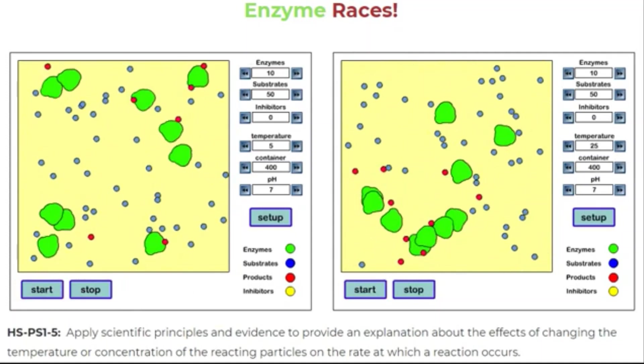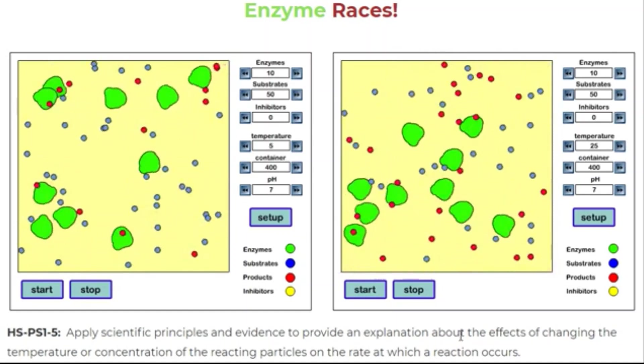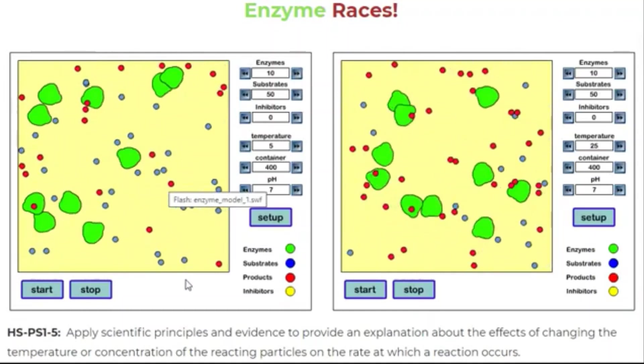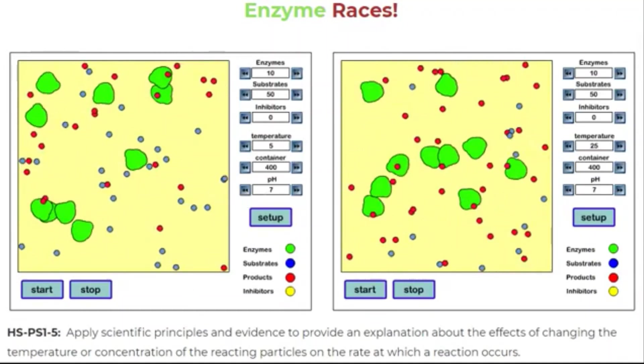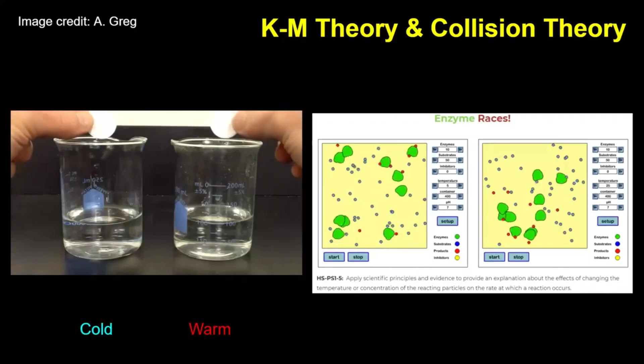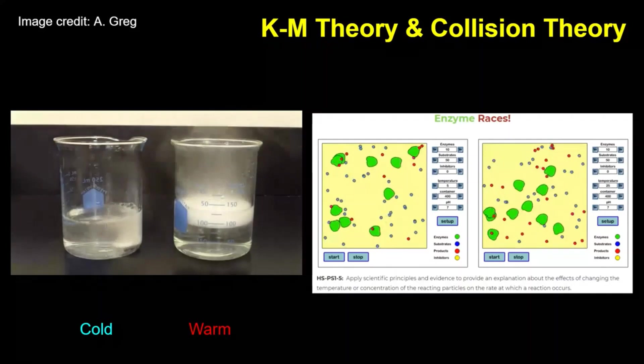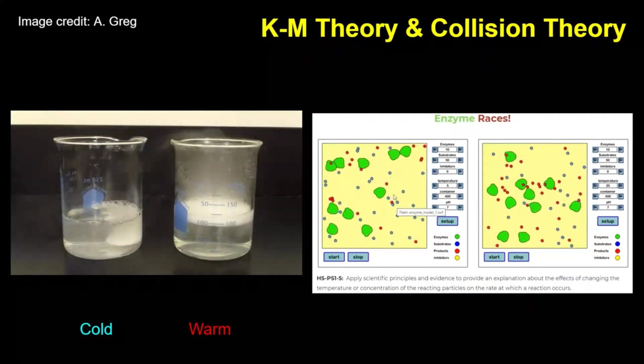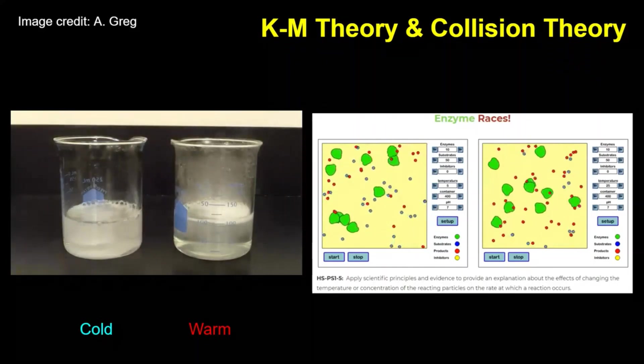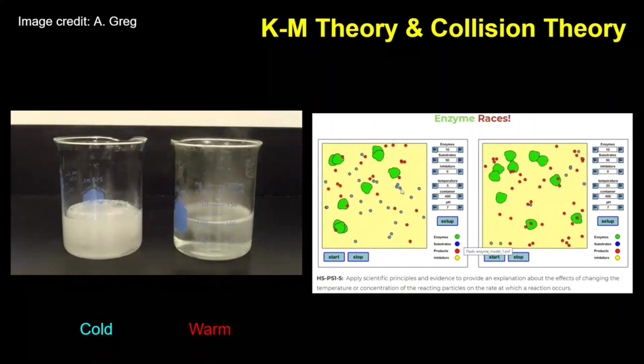As you watch the simulation run, you can see that the right reaction window reaches 90% conversion of substrate to product much more quickly than the left reaction window. This happens because particles move more quickly in warmer conditions. Higher temperatures mean that the particles are moving faster which will make them more likely to bump into each other and react. We can use this computer model to help us explain why the effervescent antacid tablet reacted more quickly in warm water. The particles in the warm water beaker were moving much more rapidly which increased the frequency and energy of collisions between reactant particles. This made the reaction happen more quickly.